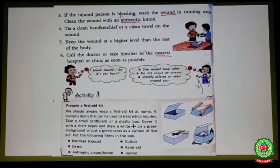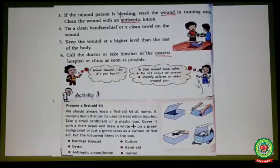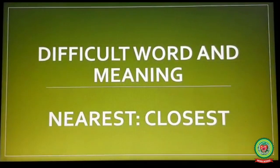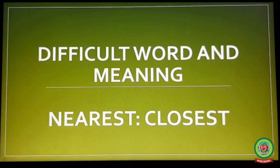Point number four: tie a clean handkerchief or a clean towel on the wound, as it helps to protect the wound from dirt and germs. Point number five: keep the wound at a higher level than the rest of the body, as it helps to slow down the flow of blood. Point number six: call the doctor or take him or her to the nearest hospital or clinic as soon as possible. Underline the word 'nearest' and write its meaning: 'closest'.